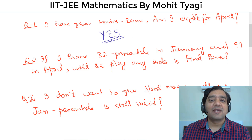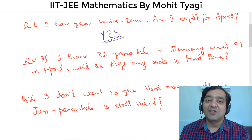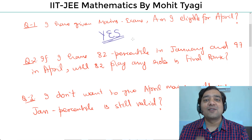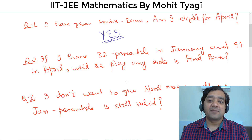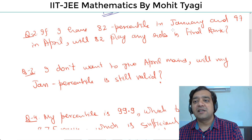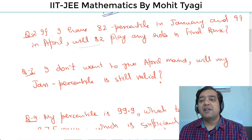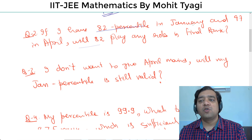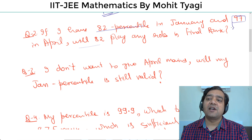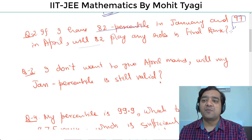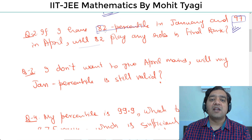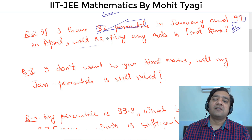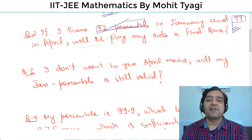82 percentile in January and 97 in April — will 82 play any role in final rank? Of course not। 82 का कोई role नहीं होगा अगर final 97 आया है। 97 का ही role होगा, और tiebreaker के समय जो PCM की percentile use होगी — M, P, C इस order में — वो 97 वाले attempt की corresponding percentile ही use होगी। दूसरे वाले यानी 82 वाले altogether reject होंगे। कोई average नहीं लिया जाएगा, कोई normalization नहीं होगी — 97 as it is use होगा।